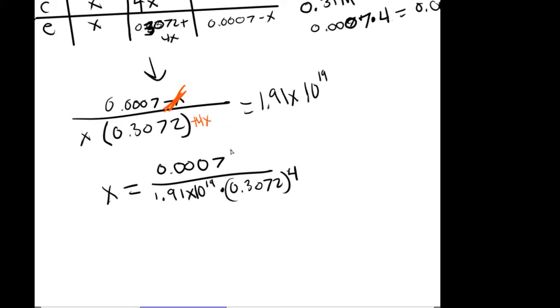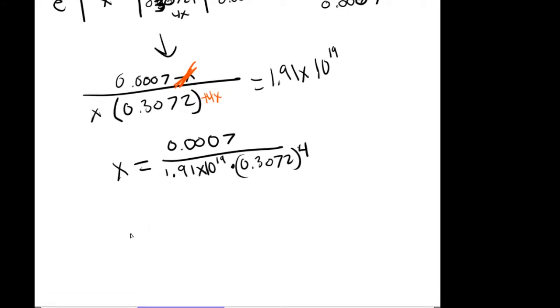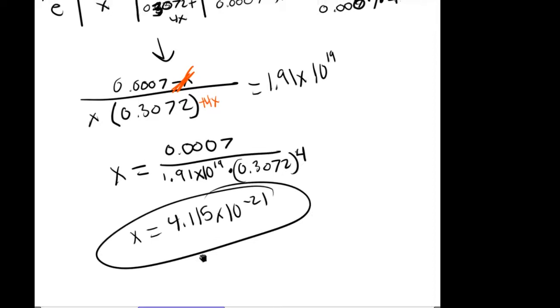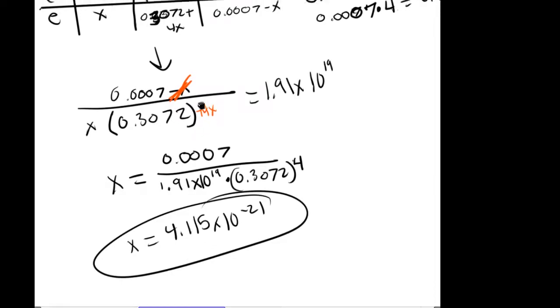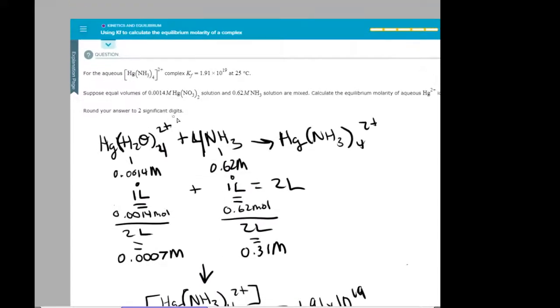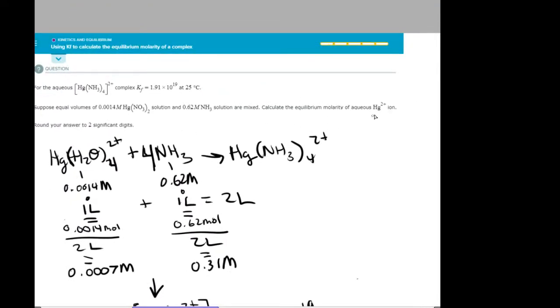And we do that with small numbers too when it's above 500. So then X equals 4.115 times 10 to the negative 21. And that's your equilibrium molarity for, I think this.